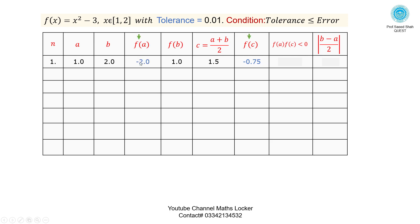Check the product f(a)·f(c): (-2)·(-0.75) — both negative, product is positive. This condition is false, meaning the root does not lie in the interval [a, c] but is lying in the interval [c, b]. Take the error: |b - a| / 2 = |2 - 1| / 2 = 0.5. Take the next iteration.